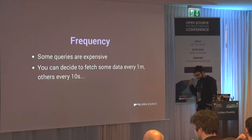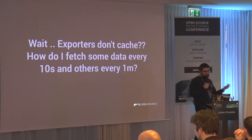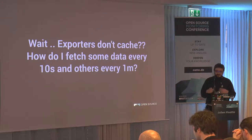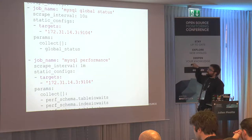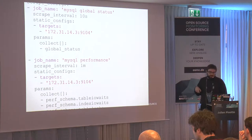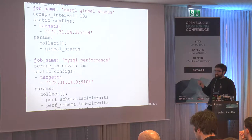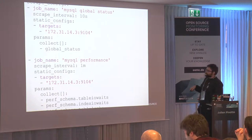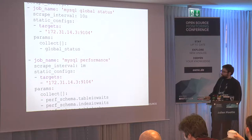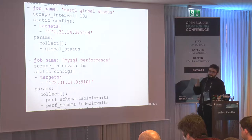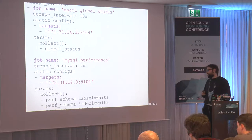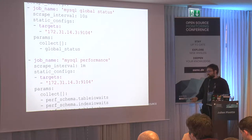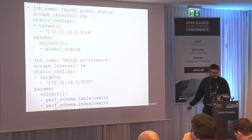To handle different collection frequencies, you can pass parameters to the exporter. For example, every 10 seconds collect the global status — that's fast, useful, and you can alert on it more easily. But for the performance schema, maybe you only want to run that every one minute. You can pass the 'collect' parameter to enable or disable specific collectors. This allows you to still get high-frequency data on important metrics while polling others less frequently.